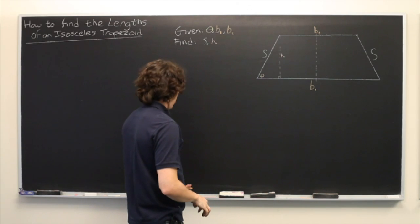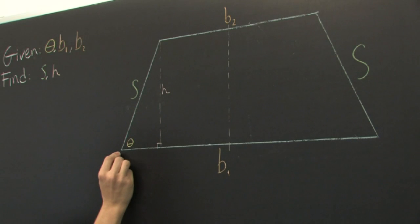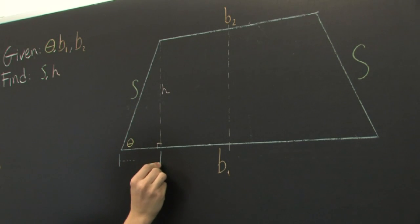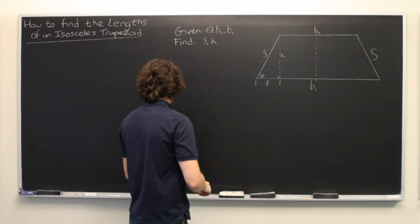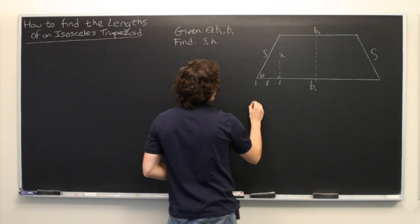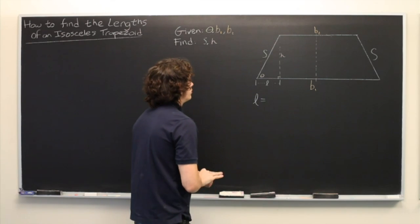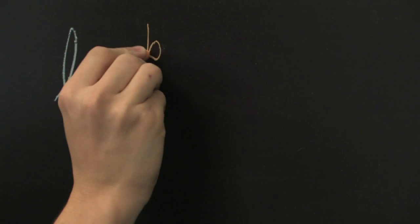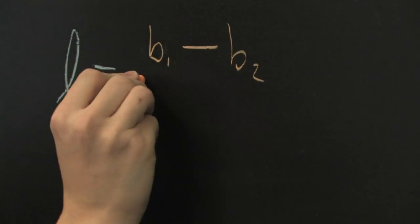In order to do that, there is one other piece of information that will be helpful, and that is the length of this segment here. We'll call it L. It's fairly easy to show that the length of L is equal to B1 minus B2 over 2.